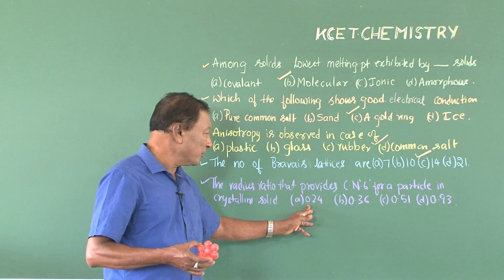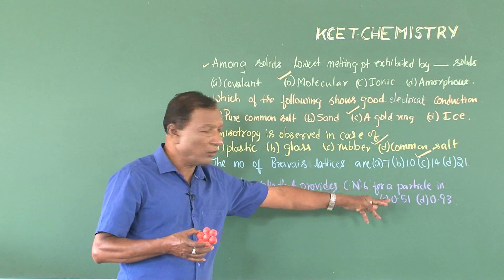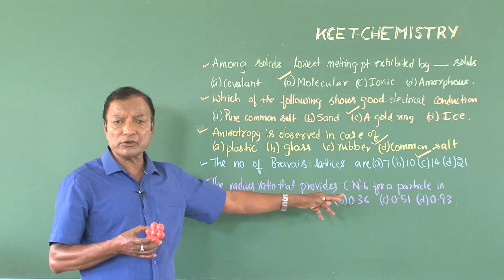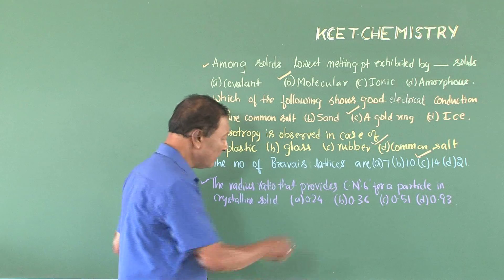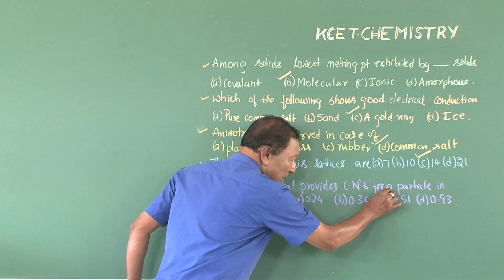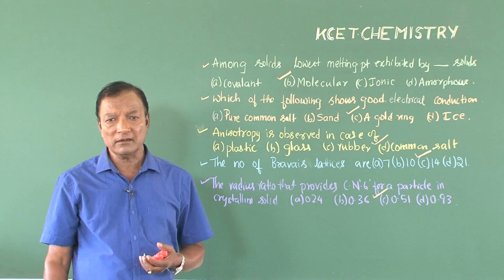The radius ratio 0.24, 0.36, 0.51, 0.93 - there we have to select the coordination number six. Naturally, the selection falls upon the option number or option C, that is 0.51.